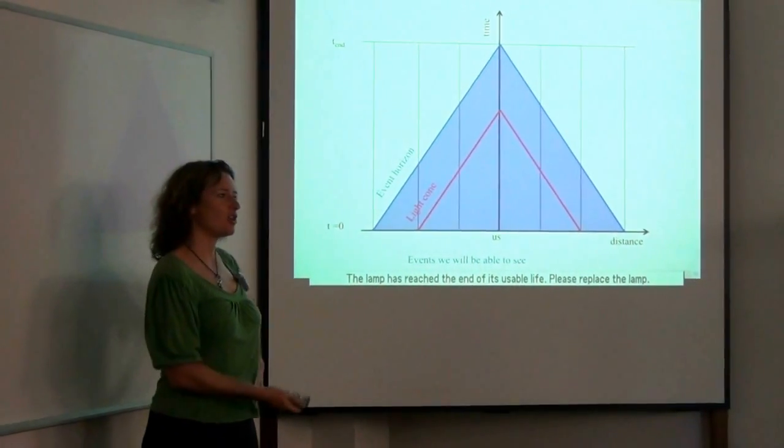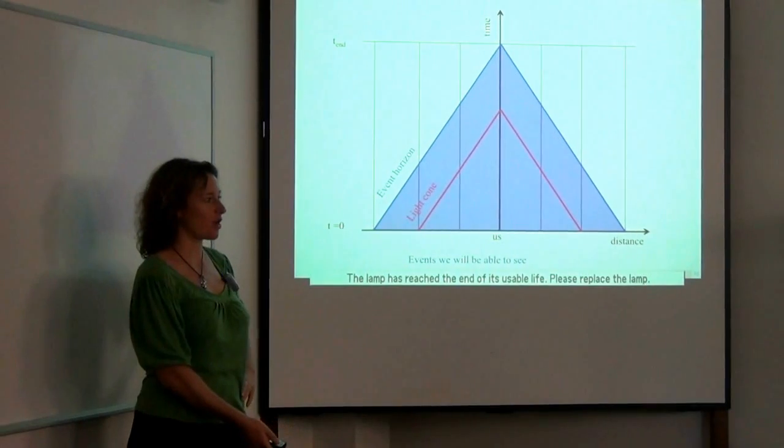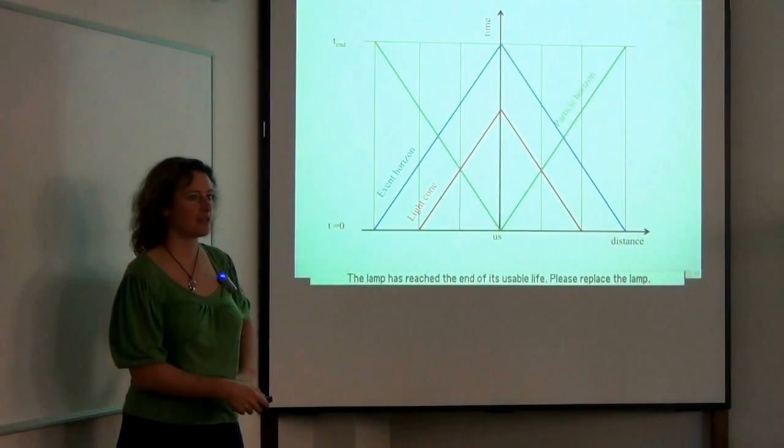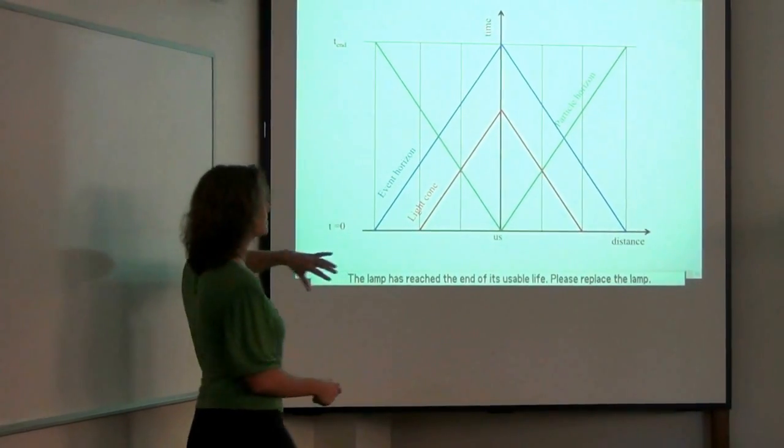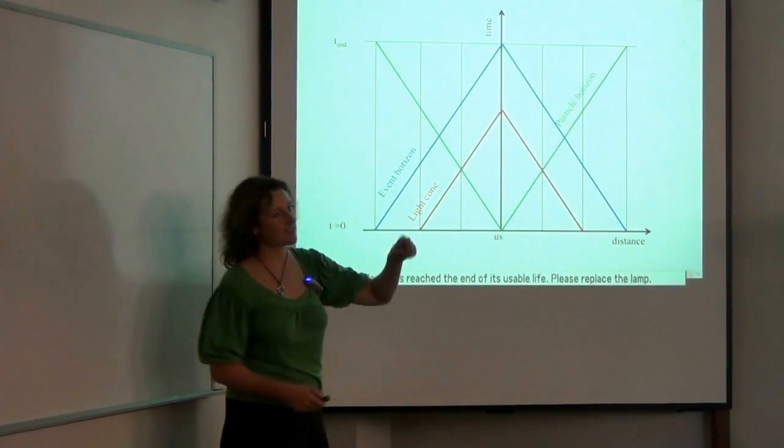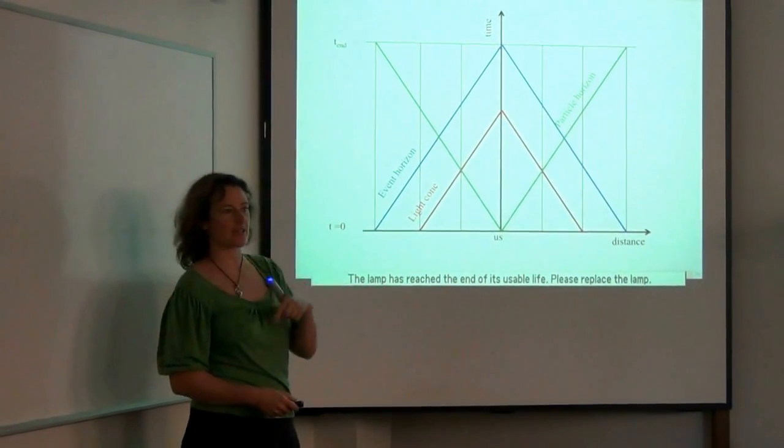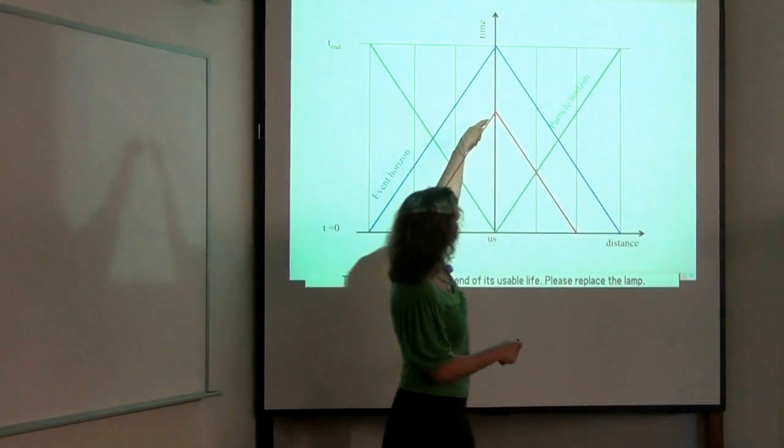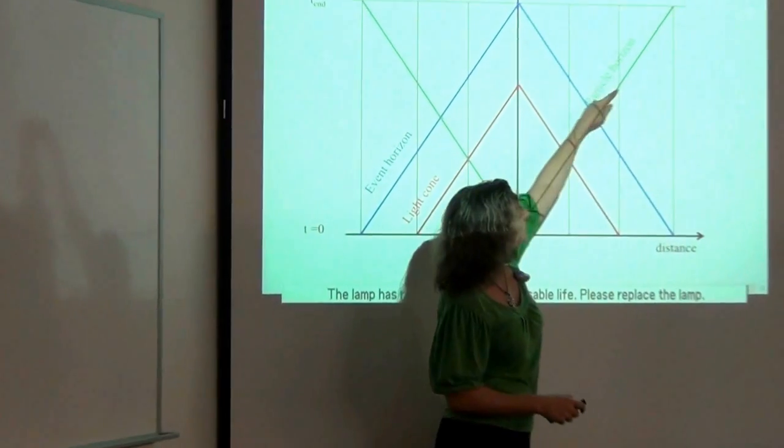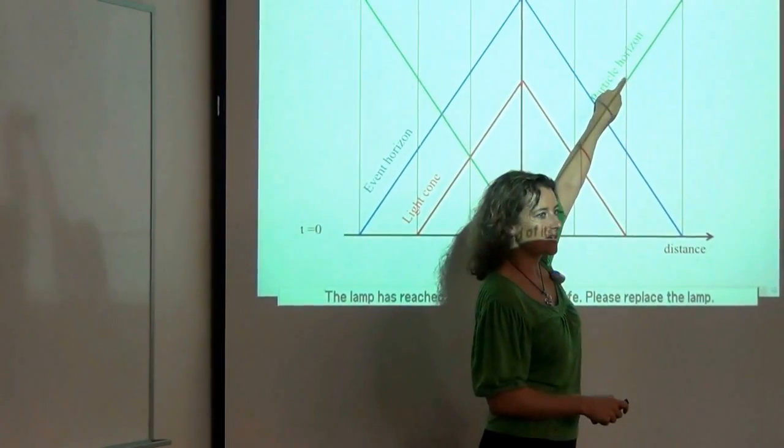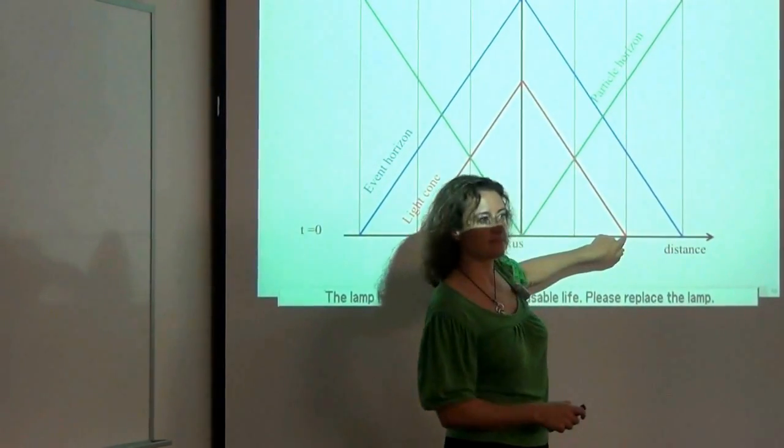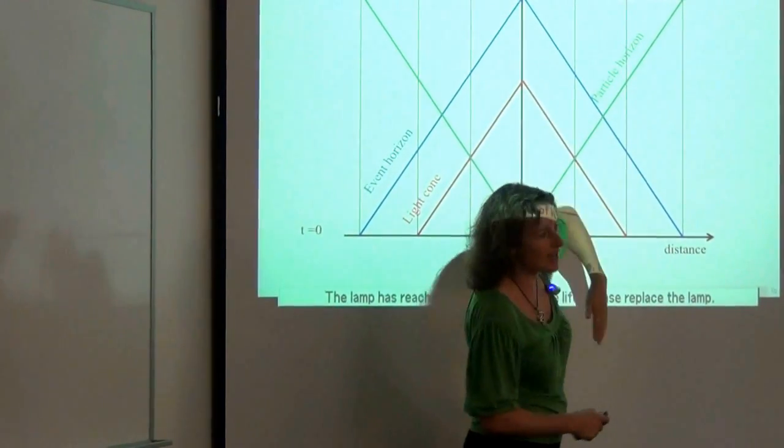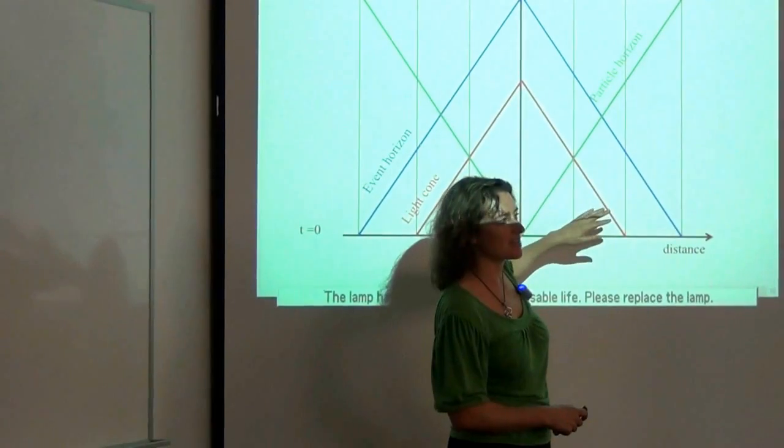So there's another horizon that is often used when describing the universe, and that's the particle horizon. So it's different from the event horizon. It's sort of actually the inverse. The particle horizon is the distance to the most distant object that we can currently see. So you can see, for example, that at the present day, the most distant object that we can currently see is this one. We see that object as it was here. So it emitted the light there. We see it now. And so that's why the particle horizon is like the mirror image of the past light cone.